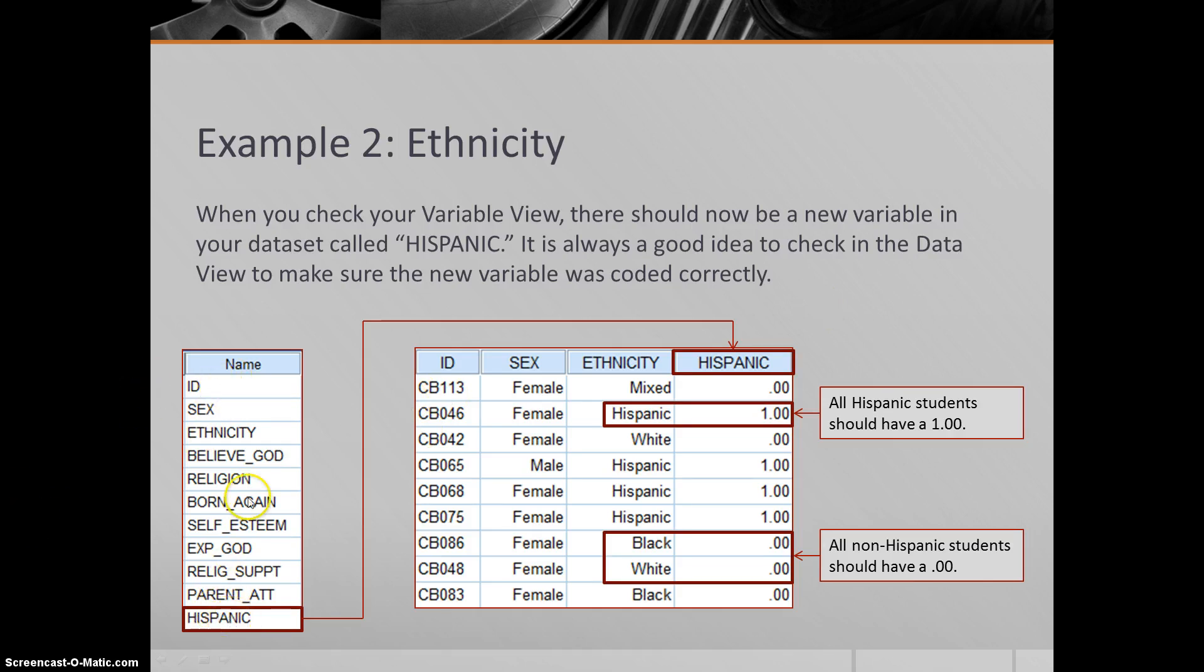It would be down here at the bottom of the list—these are the variables that were already there. Now this new one, Hispanic. What I did here is I moved it up the list to be right next to ethnicity. That's why it's right here on this list, in this picture, and on this picture, I moved it in between here to put it side by side. It's always a good idea to check in the data view to make sure it was coded correctly.